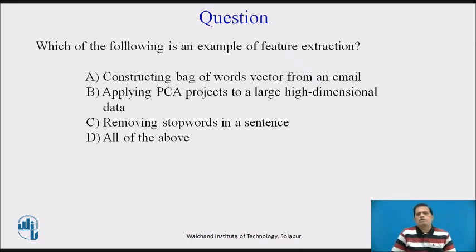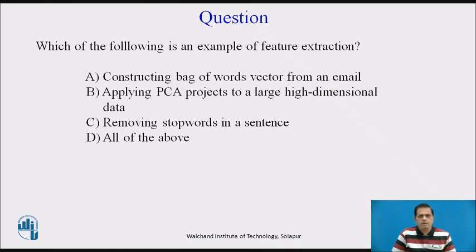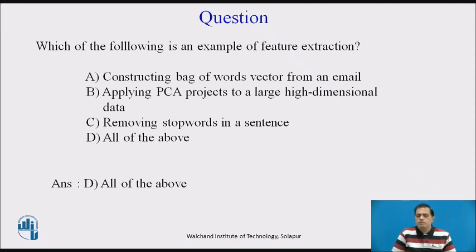There is a question on this topic: which of the following is an example of feature extraction? The options are: constructing a bag-of-words vector from an email; applying PCA (principal component analysis) to large high-dimensional data; removing stop words in a sentence; or all of the above. The answer is all of the above, because when using feature extraction in data preparation, we first construct the dataset from different sources, then use PCA to handle high-dimensional data, and then remove erroneous or stop-word data from sentences — making all three options correct.